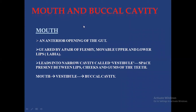The starting region of the alimentary canal is called the mouth, and the mouth leads into the buccal cavity. The mouth is the starting part of the gut and it is guarded by two fleshy movable lips — upper and lower lips — which we call labia. The mouth leads into a narrow cavity called the vestibule, and the vestibule opens into the buccal cavity.